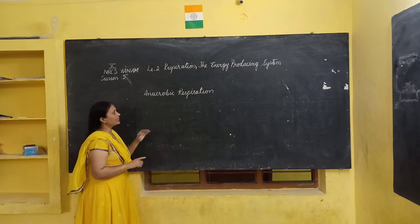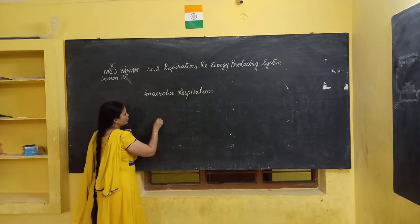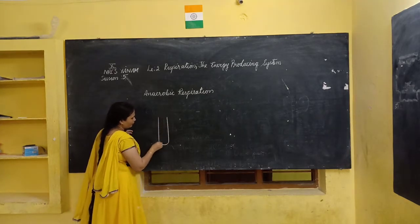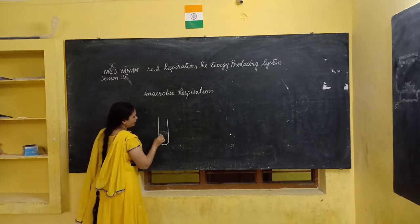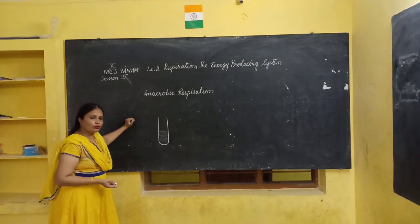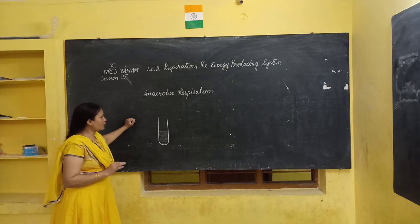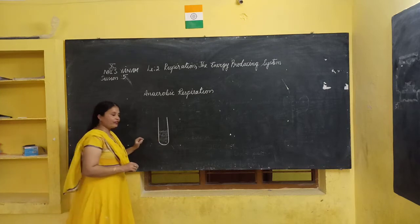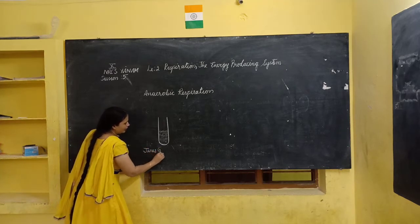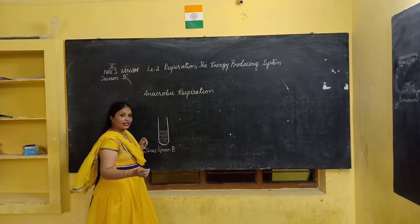For this we are going to set up the experiment. First thing, you have to take a test tube. In the test tube, you take glucose solution and boil the glucose solution so that all the oxygen is removed. And as soon as you boil that, you add a drop of Janus Green B — we also call it digene green.